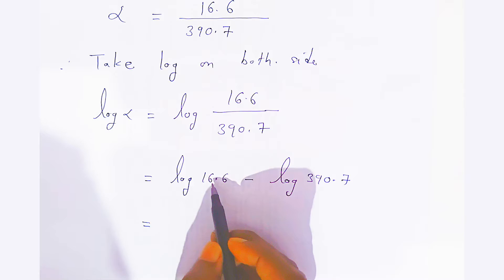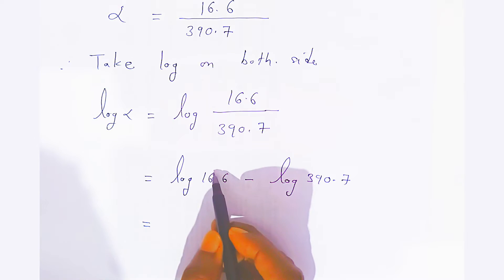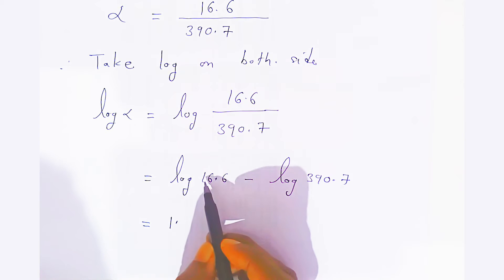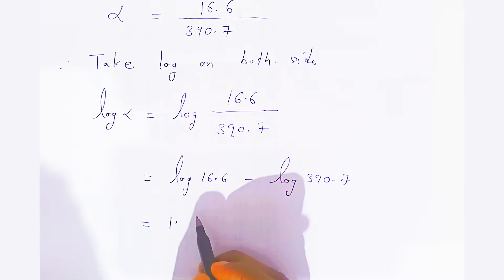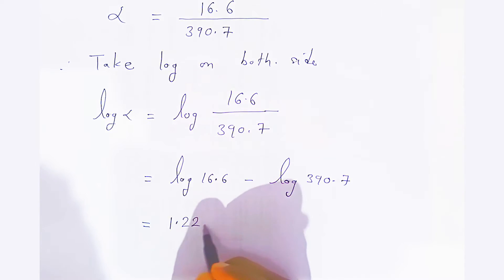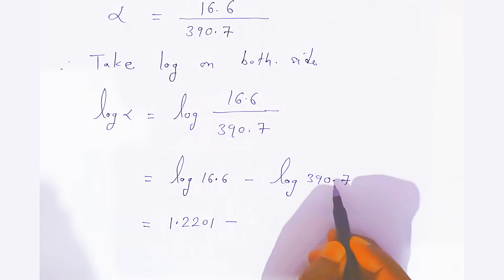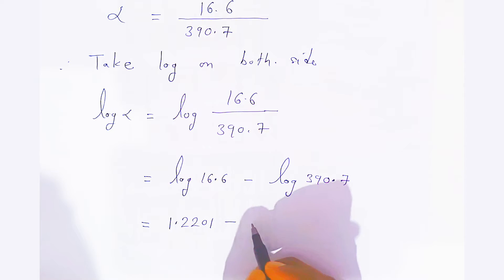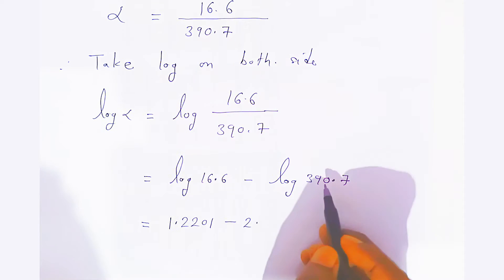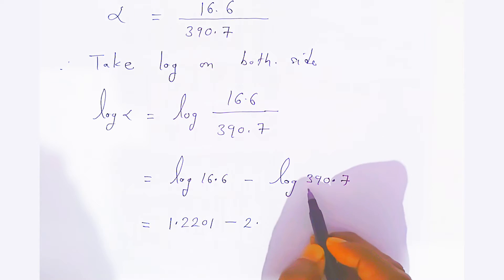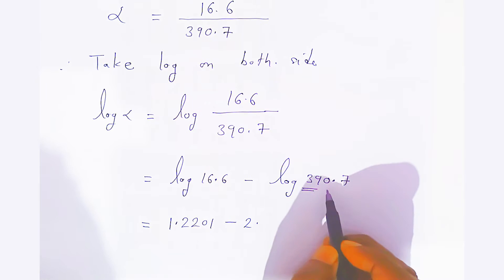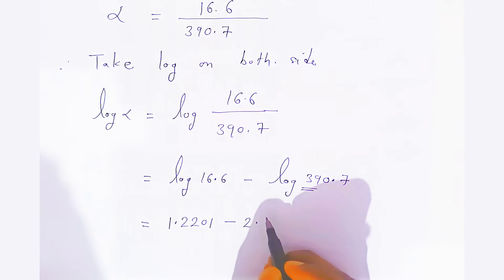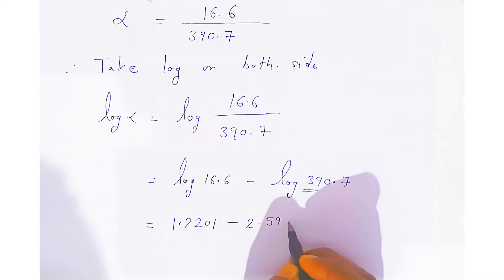What will be the characteristic? With 2 digits, it is 2 minus 1, that is 1. In the log book, in row 16 and column 6, it comes to 2201. Now what will be the characteristic for 390.7? Before the decimal you have 3 digits — 1, 2, 3 — so 3 minus 1 will be 2. That is the characteristic. In the log table, see row 39, column 0, and when you add the mean difference for 7, you will get 5919.